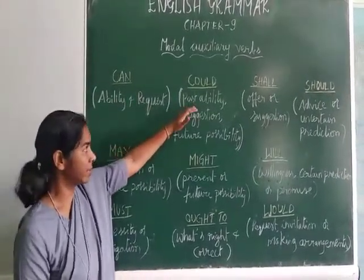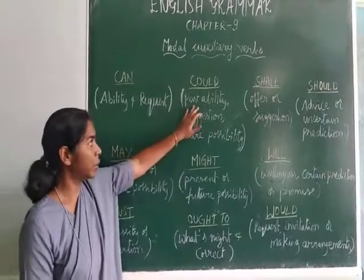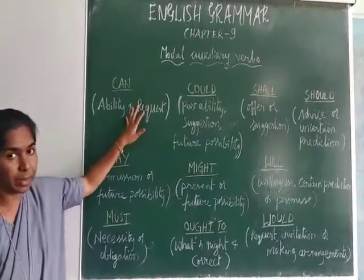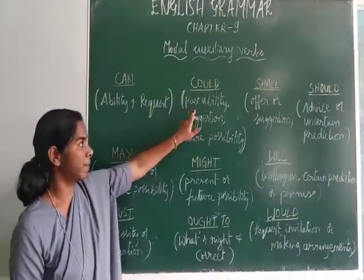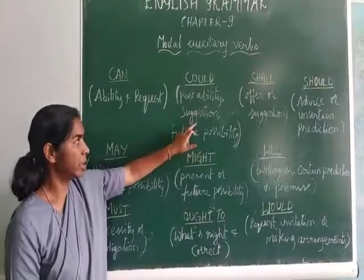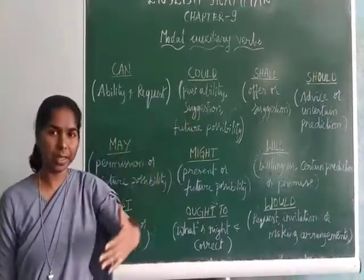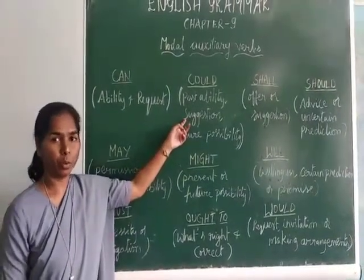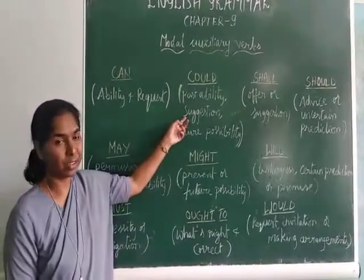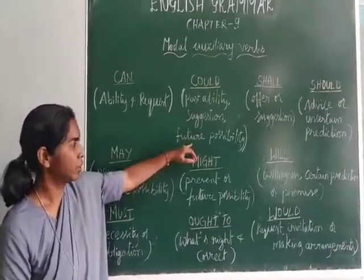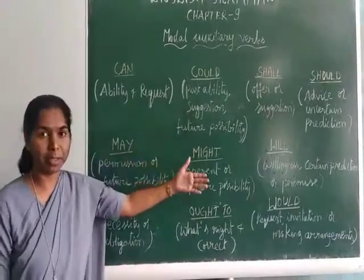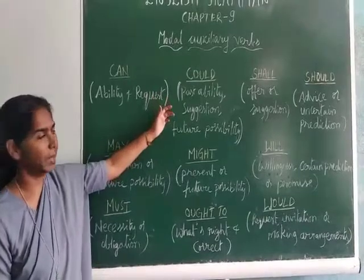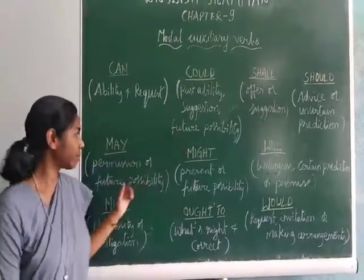The next one is 'could'. Could is the past form of can, so could is used for expressing past ability, while can is used for present ability. Could is also used for suggestion — when you use 'could' to the second person it acts as a suggestion, for example: 'You could go to hospital if you are sick.' Could is also used to express future possibility — something that is possible in the future.